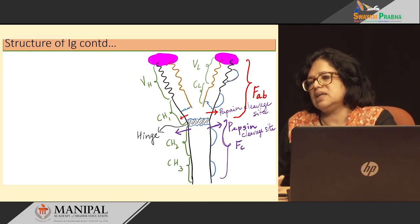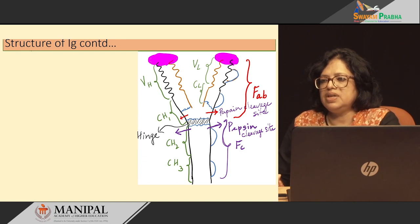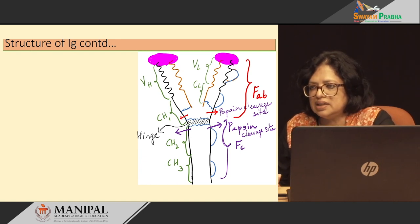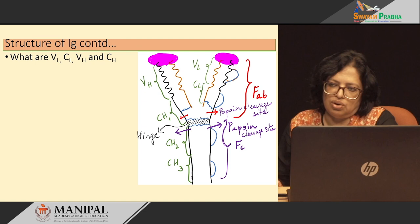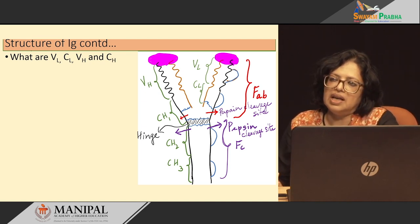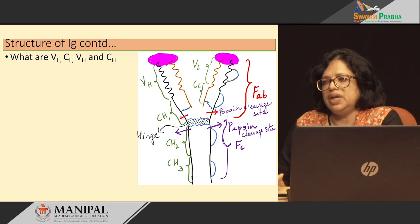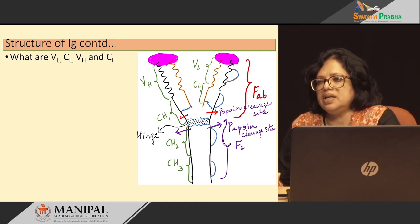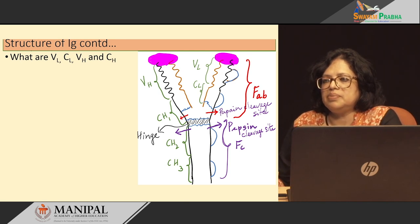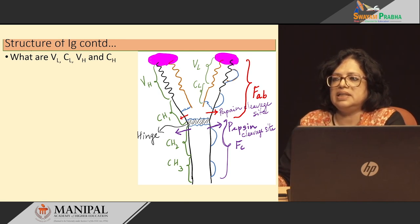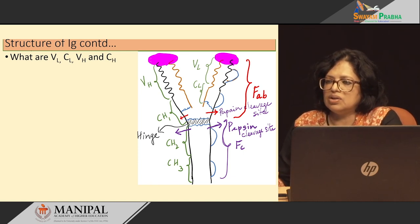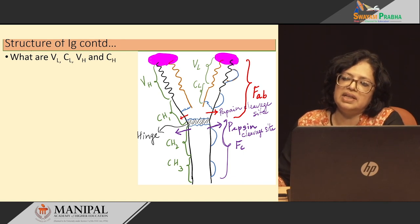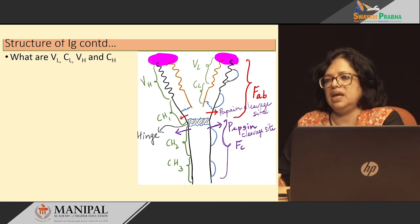Now, looking at the structure of immunoglobulin once again, we see some new terminologies: VH, CH, CH2, CH3, and so on. These are the domains of the light and the heavy chains. VL represents the variable region of the light chain; CL represents the constant region of the light chain. Similarly, in the heavy chain, we have four domains: variable heavy chain (VH), constant heavy chain 1 (CH1), constant heavy chain 2 (CH2), and constant heavy chain 3 (CH3).